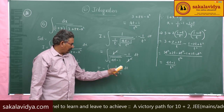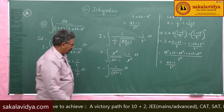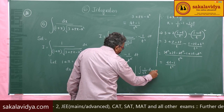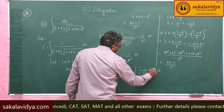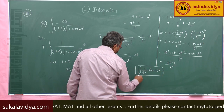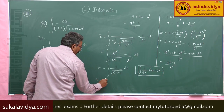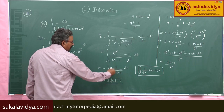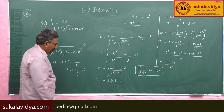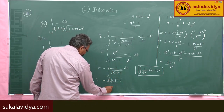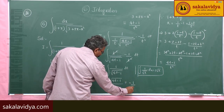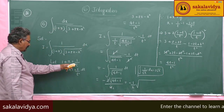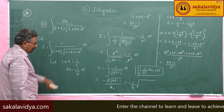This is in the form of the integral of 1 by root x dx, which equals 2 root x. Using this formula, the result is minus 2 times the square root of (4t minus 1), divided by 4 — since the derivative of (4t minus 1) is 4 — giving minus one half times the square root of (4t minus 1). Now substituting back: t equals 1 by (1 plus x).